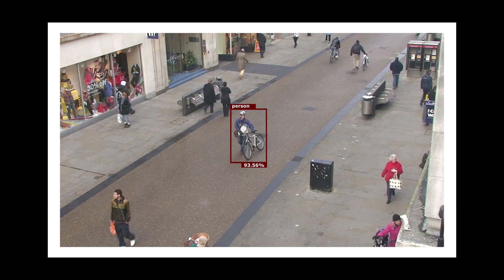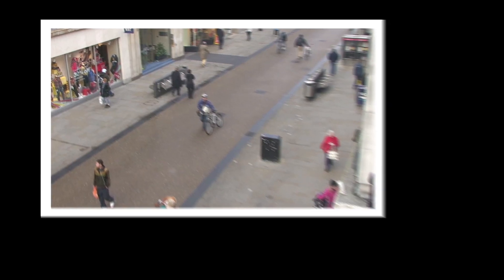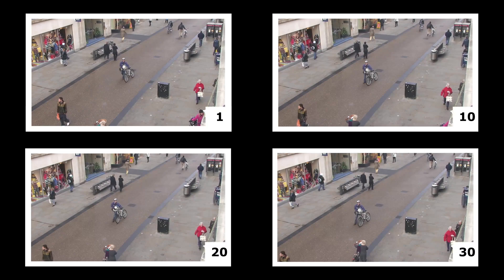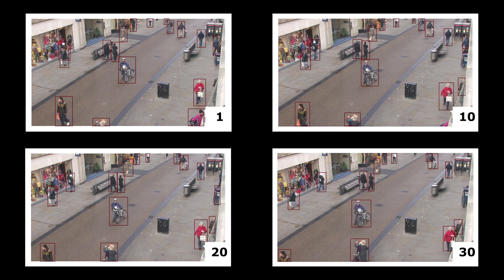With video, we have an additional component: time. When the video is playing, the people in the video move from one frame to another. If we take the first, tenth, twentieth, and thirtieth frames of the town centre video, we can clearly see the difference — just look at the man and the woman in the bottom left of each frame. Now imagine we were to run an object detection algorithm trained to detect people on each of these frames. Its output would look something like this.